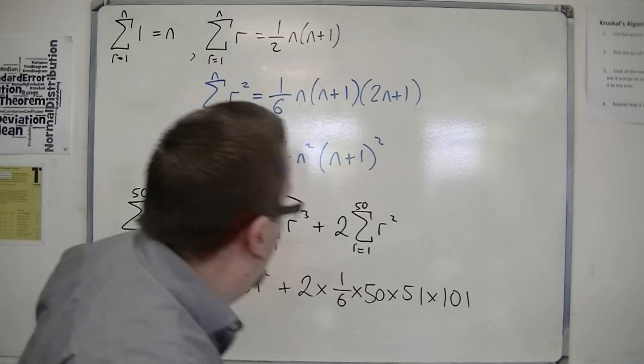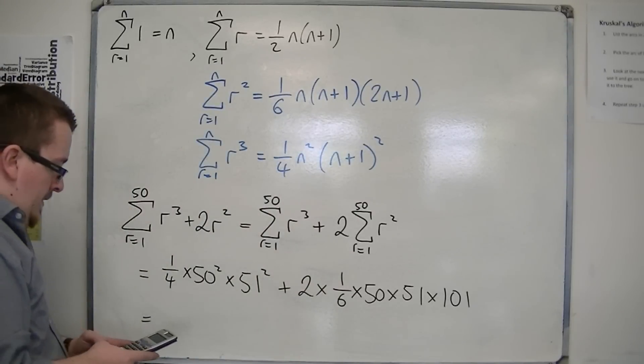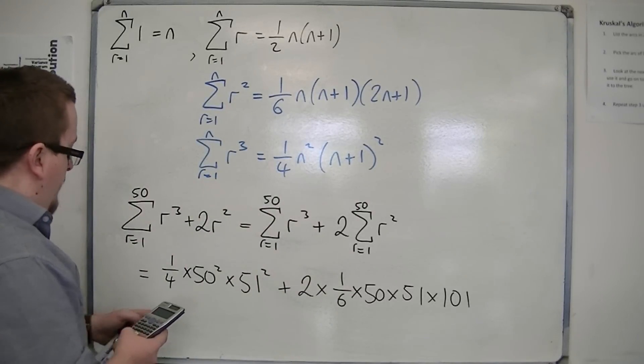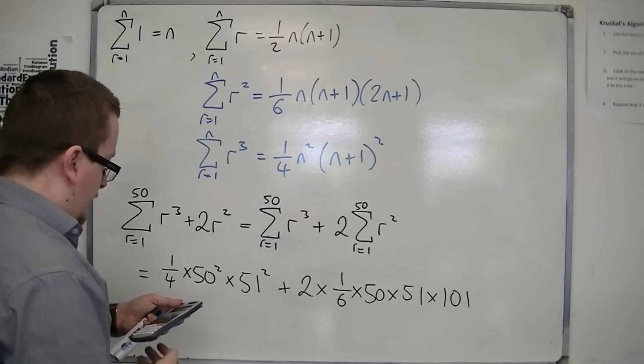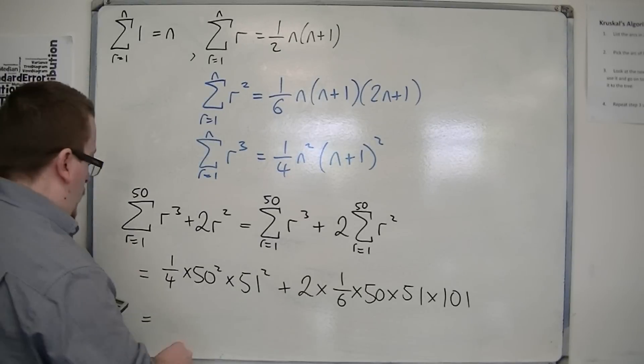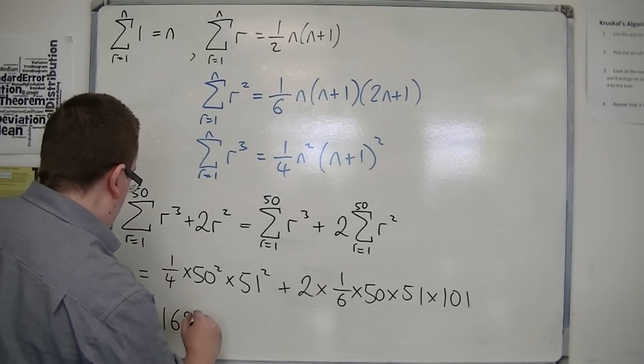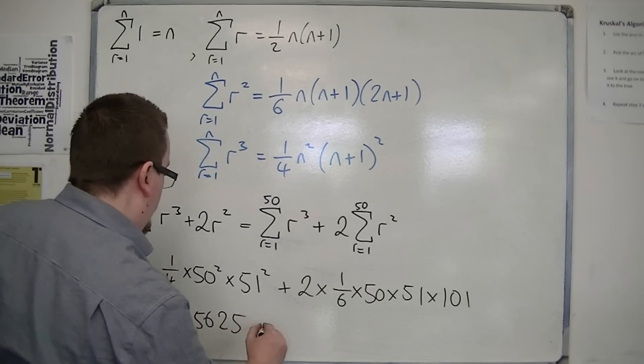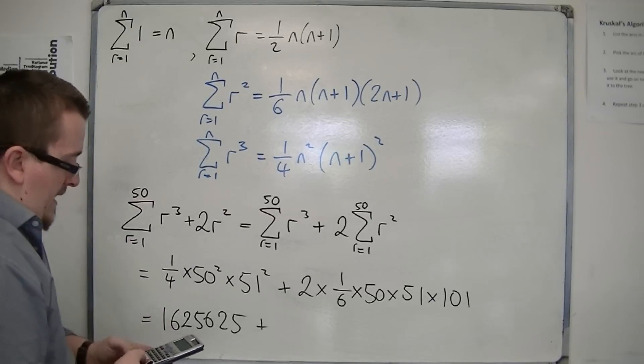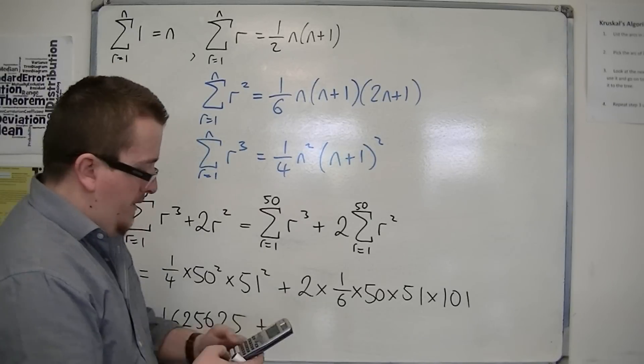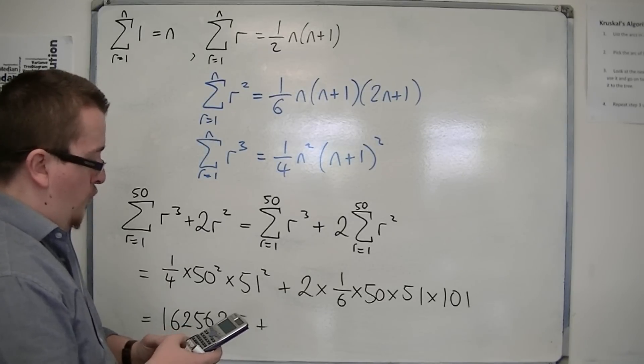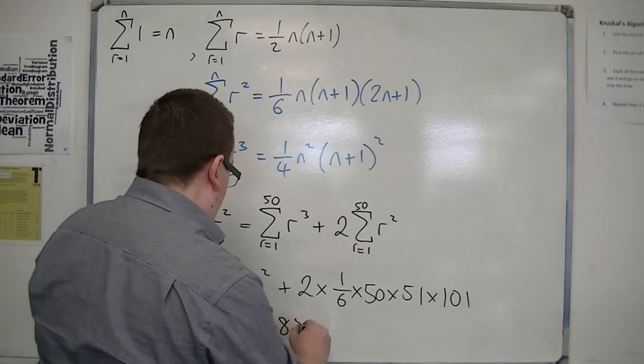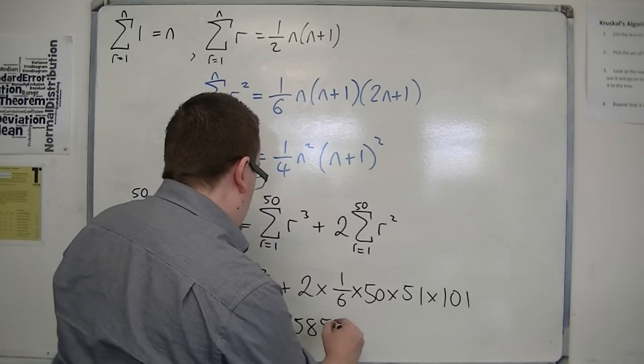So we've popped that all into the calculator. So we've got 1 quarter times 50 squared times 51 squared. So that's 1,625,625. And then we've got 1 third times 50 times 51 times 101, which is 85,850.